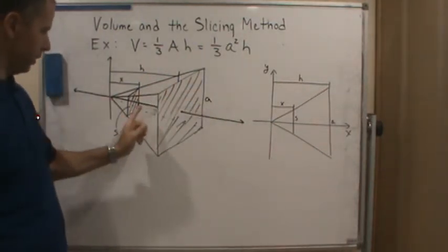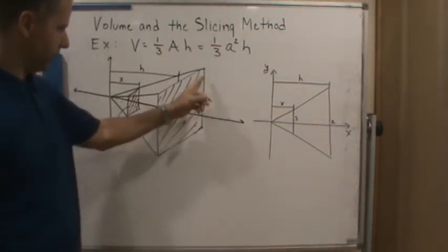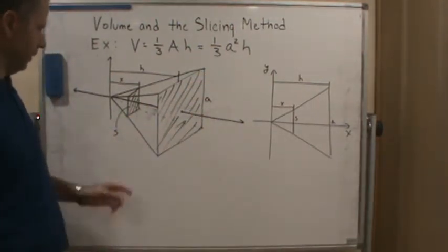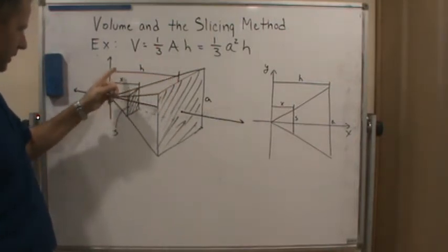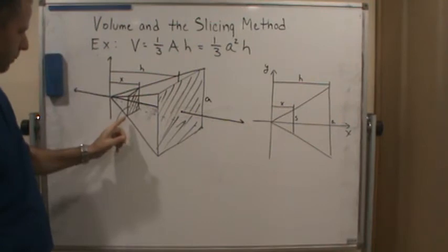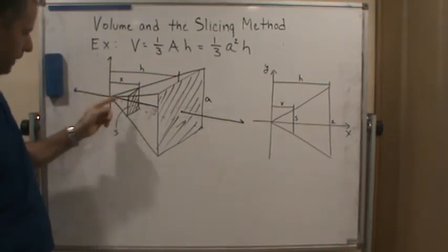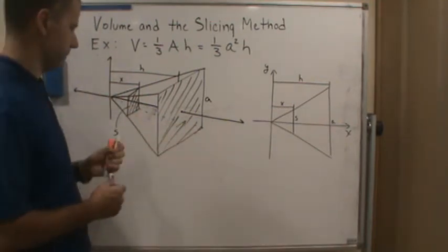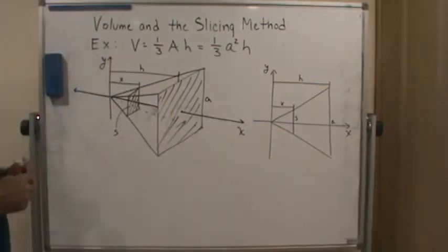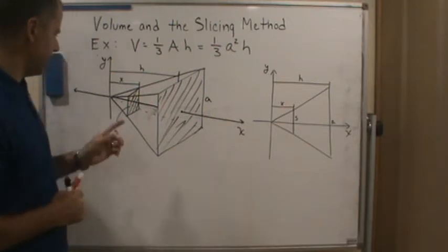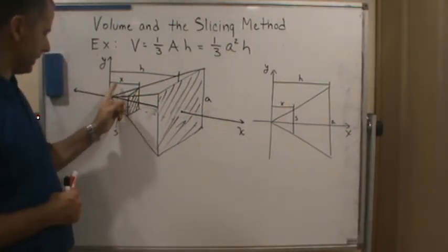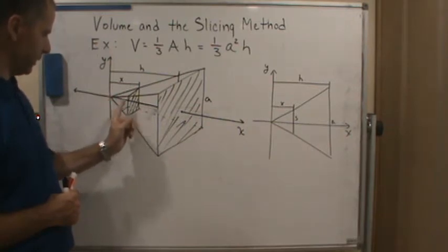So it goes from the top, the point, all the way to the base. And here's the length of one of the sides of the base, a. The height of the pyramid is h. And so what I did was I have this cross-section that's perpendicular to the x-axis. And the distance this slice is from the y-axis is x. As you can see, it goes from 0 to x.